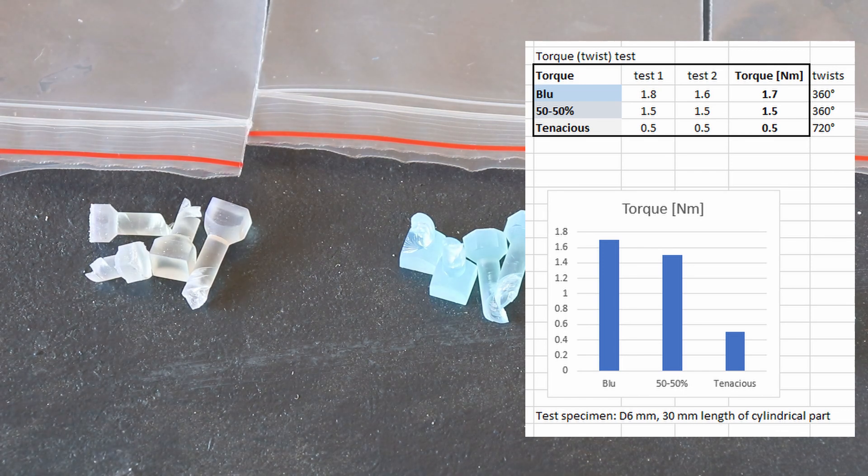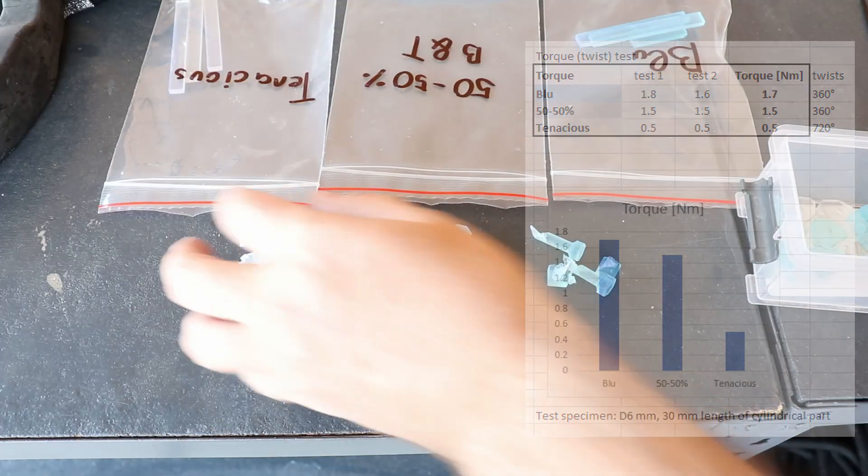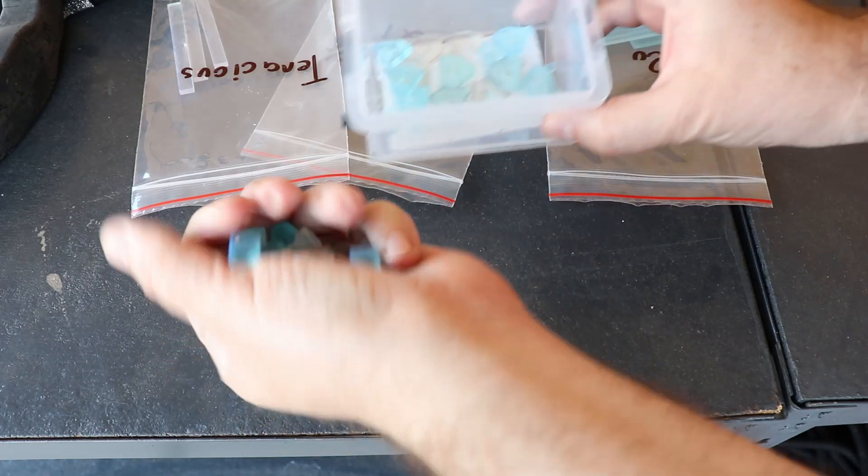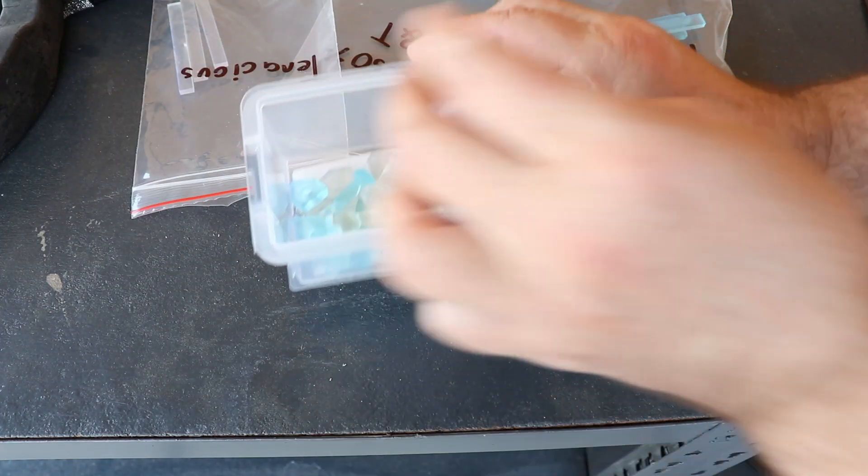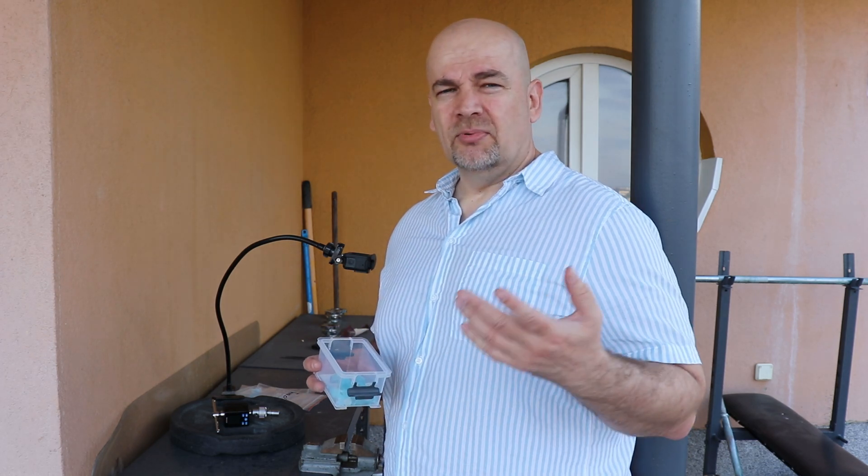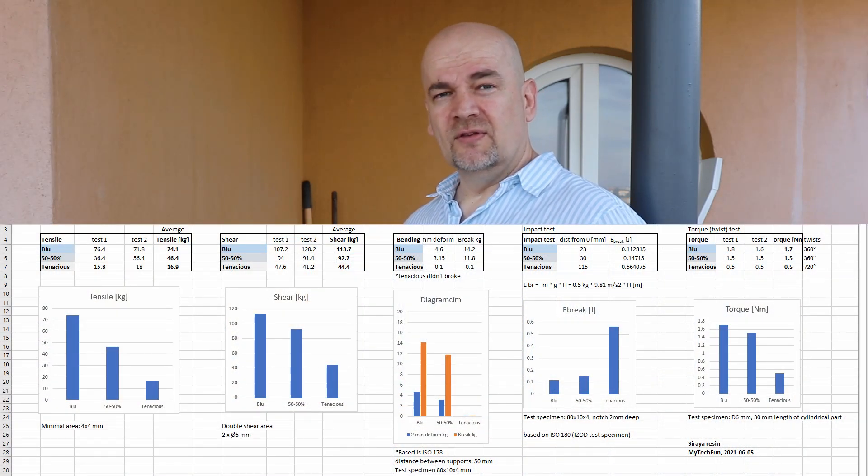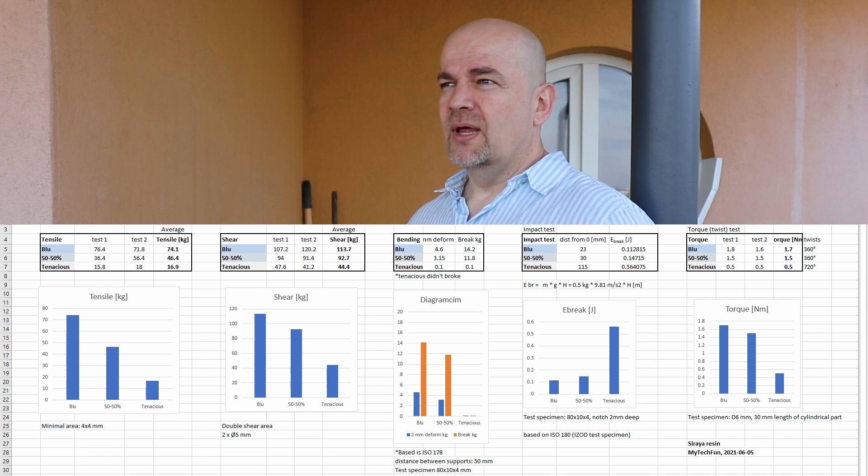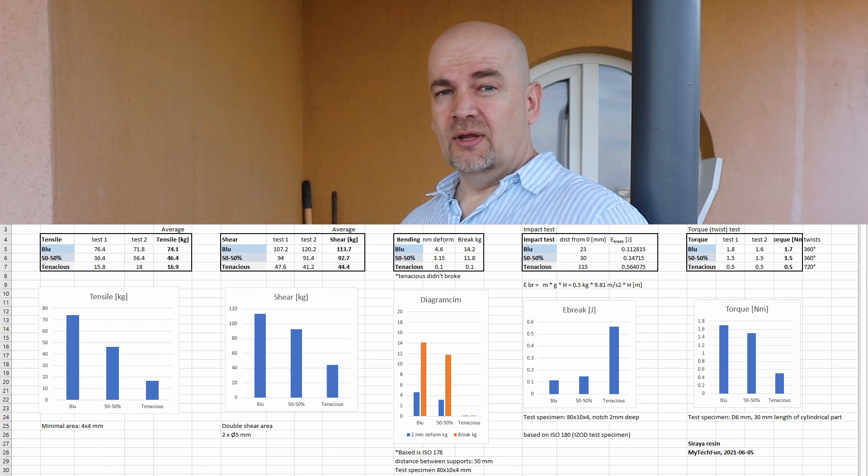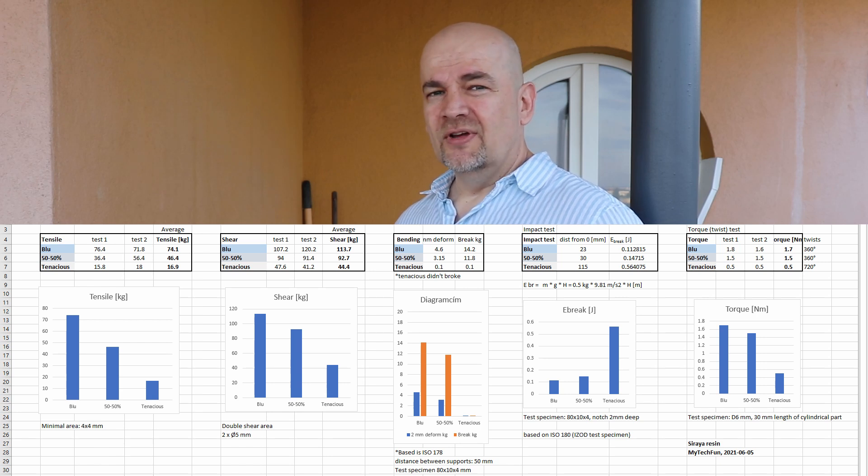And now the conclusions. Well, they are completely different types of the resins. The Siraya Blue is very strong and rigid material. The Tenacious is soft and flexible. And I know I could play more with the mixing ratio, but don't forget I still don't have SLA/LCD printers. I use here a printing service, and these test specimens are printed for me.